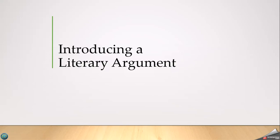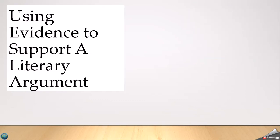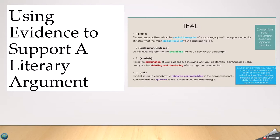Hi everyone and welcome back. Last time we looked at introducing a literary argument and structuring our opening with a claim and reasons. Today we're going to be looking at the second and third part of argument, which is using evidence to support and prove your claim. We're going to review the PEEL or TEAL method, and then look at four sample paragraphs from actual student essays and what they did to revise those paragraphs to make them stronger.